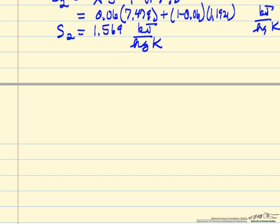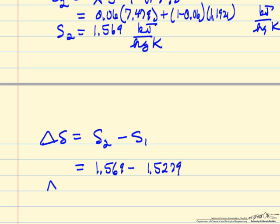Of course the problem asks us to calculate delta S, so state function means delta S is just S2 minus S1, so S2 is 1.569, S1 is 1.5279, delta S is 0.051 kilojoules per kilogram Kelvin.